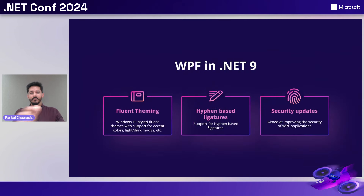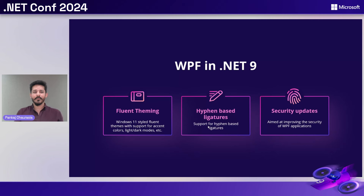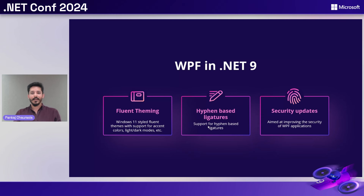With that background in mind, after we shipped all the new features in .NET 8, we wanted to figure out the next big items for .NET 9. With community inputs and multiple meetings with stakeholders from both open source and enterprises, fluent theming and hyphen-based ligatures were the top priorities. This is why in .NET 9 we dedicated enough time to get those things working. Fluent theming is the Windows 11 style fluent themes in WPF. Next, we have hyphen-based ligatures, a long-standing issue in WPF that is now resolved, and then some security updates to ensure WPF continues to remain secure going forward.